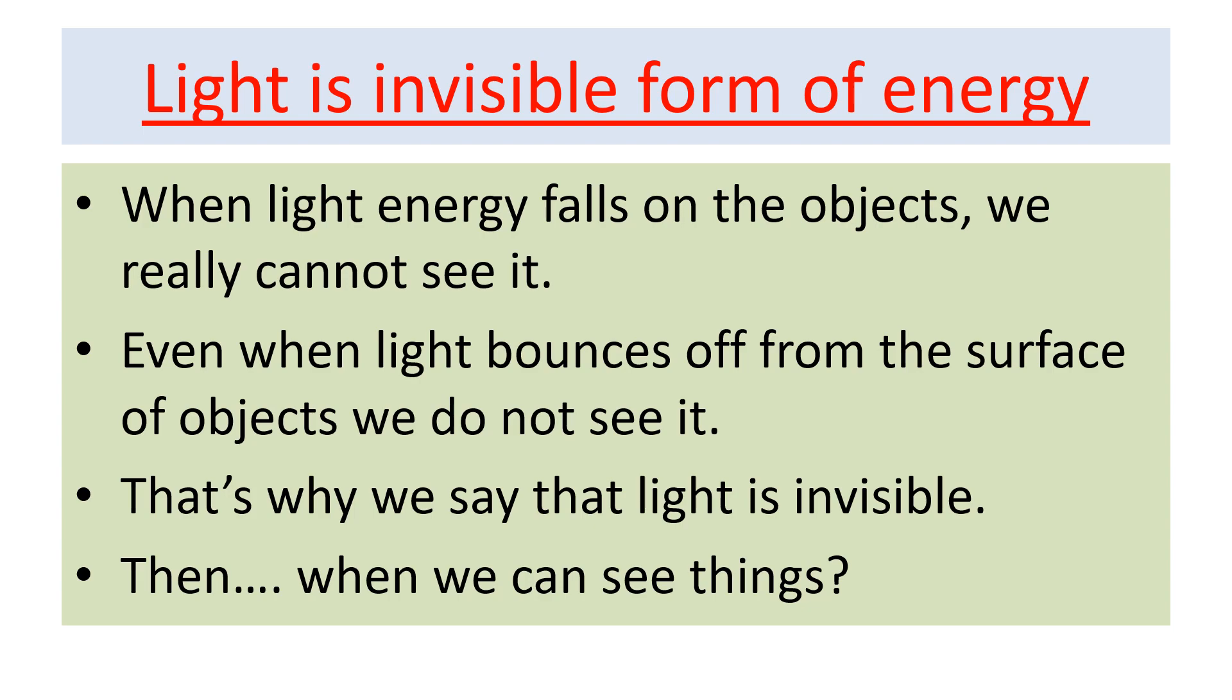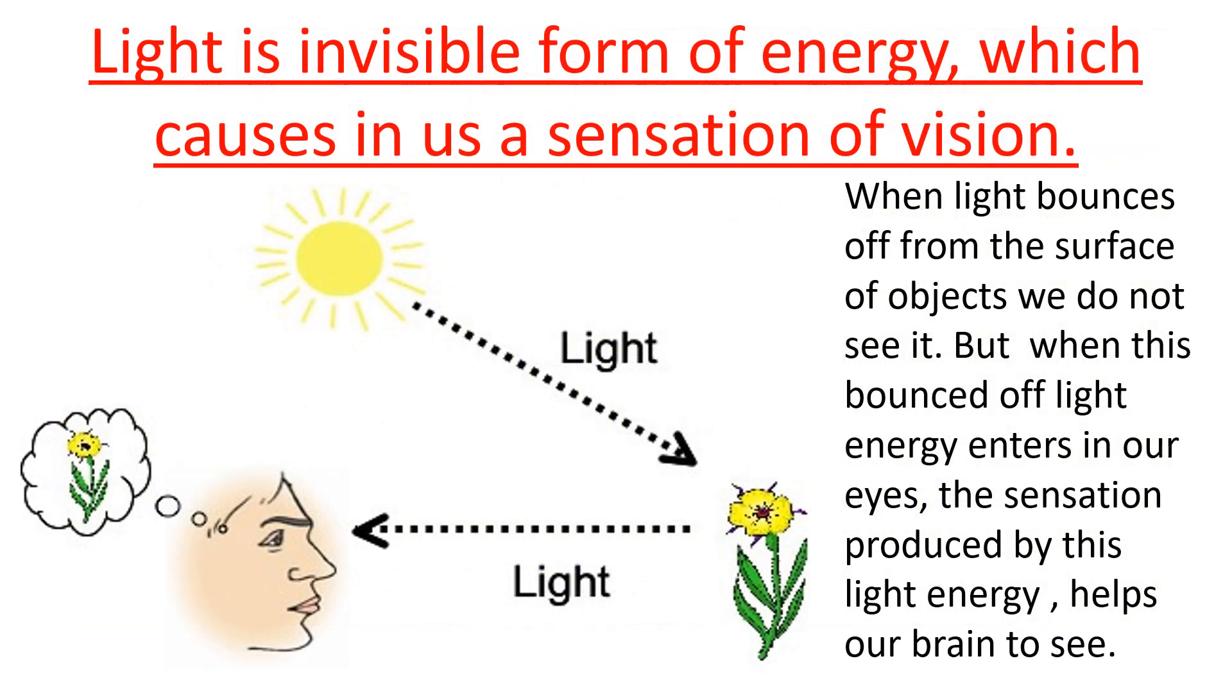Then, when we can see things? We can see things when this bounced light energy enters in our eyes. The sensation produced by this light energy helps our brain to see. Thus, light is invisible form of energy which causes in us a sensation of vision.